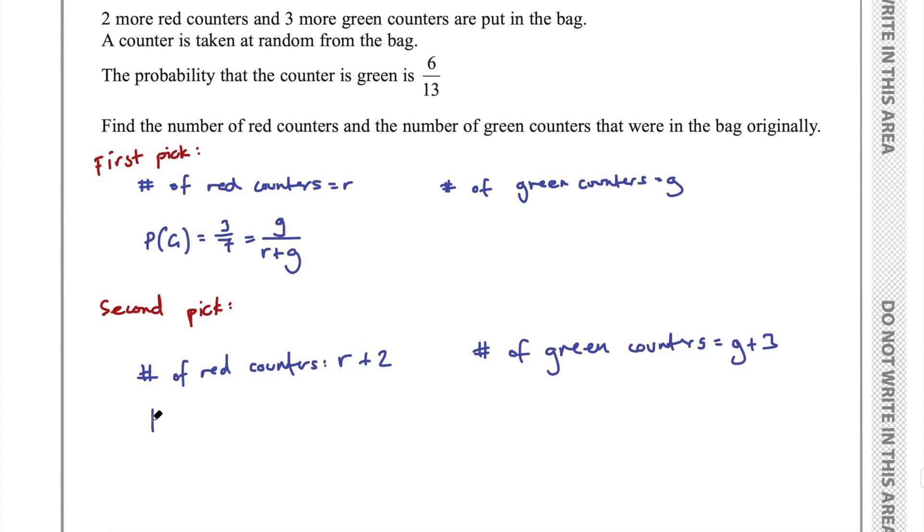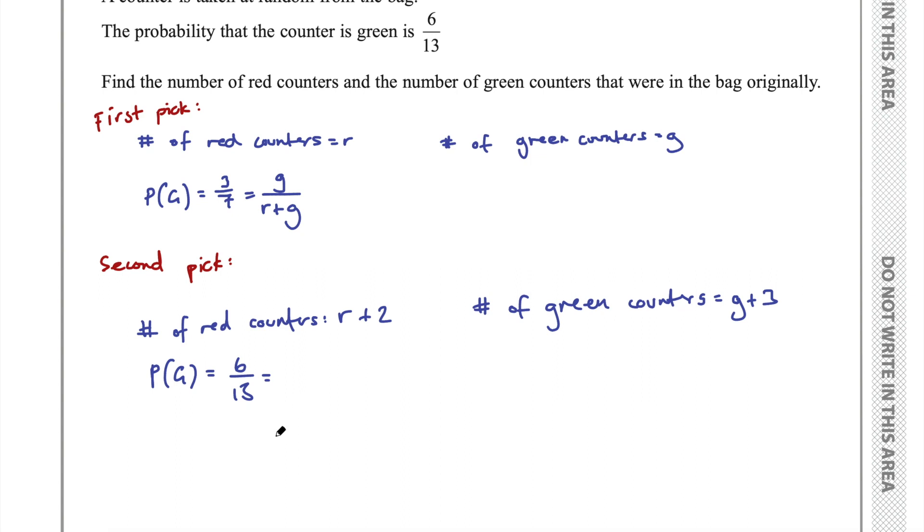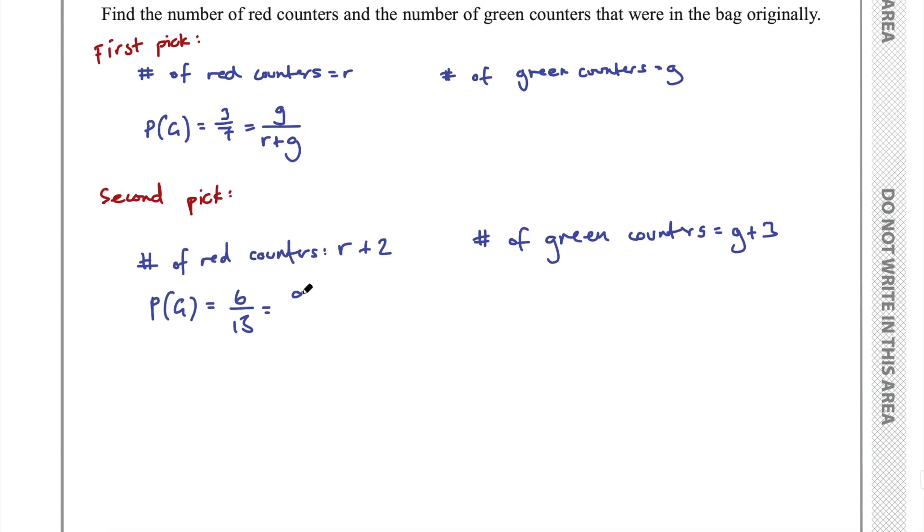They told us the probability of picking a green in the second pick is six out of 13. We want to create an equation using the same logic we did in the first part. The number of green counters is now G plus three. And the total number of counters is now G plus three plus R plus two. Because the total number of counters will be the number of green counters plus the number of red counters.